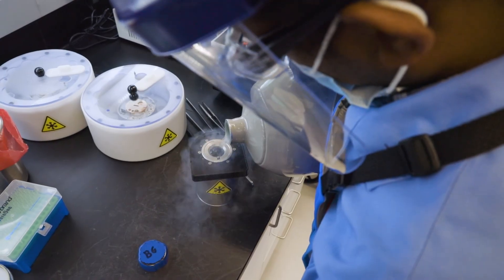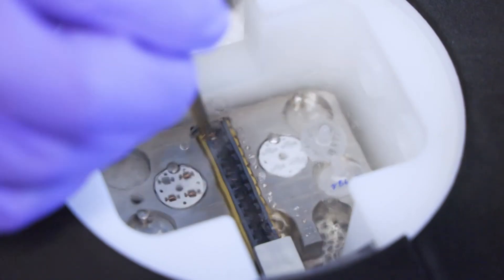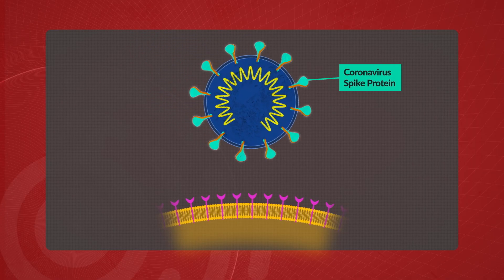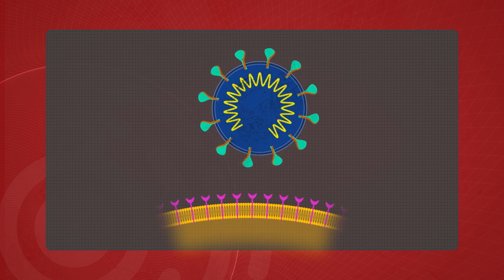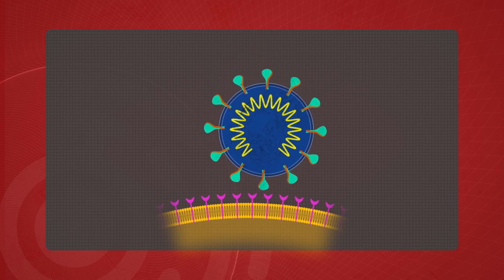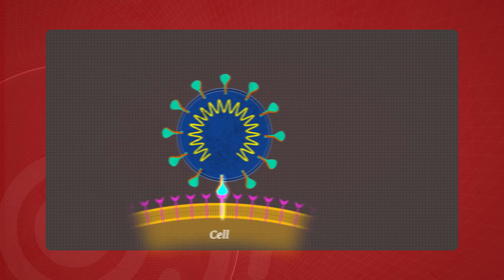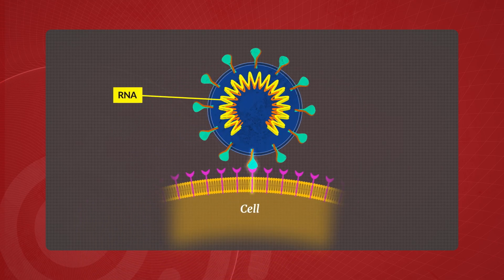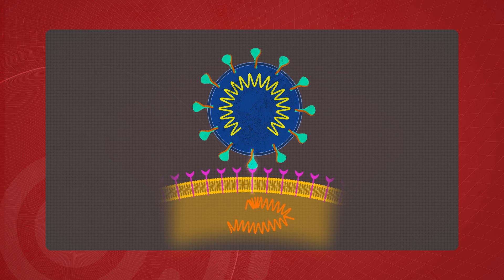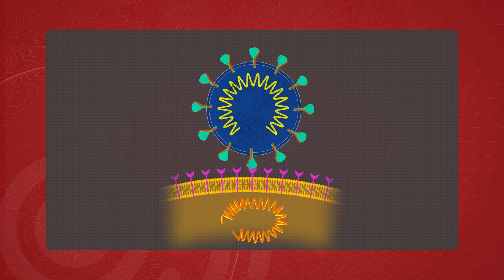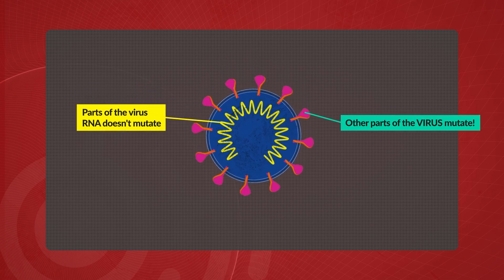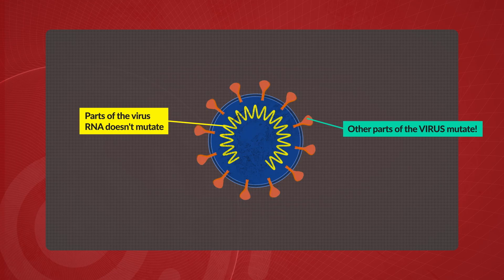Now that you understand how it works, here are some of the things that SLAC and Stanford have been doing with Cryo-EM. In the wake of the pandemic, scientists used Cryo-EM to understand how spiked proteins on the surface of a coronavirus bind with its victim's cell receptors to start infections. They also observed how a strand of coronavirus RNA tricks infected cells into producing viral proteins. Because parts of the RNA don't mutate, it's a great potential target for treating COVID-19 and other viral variants.